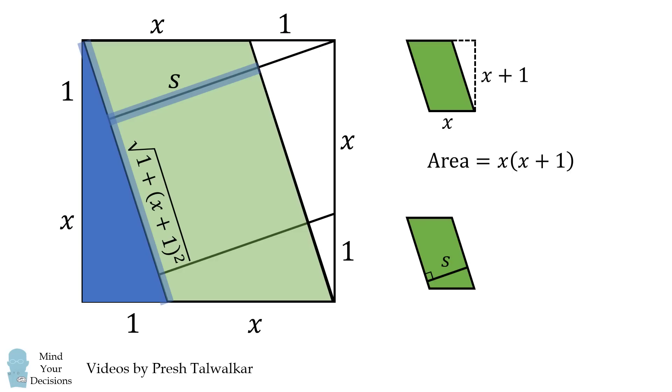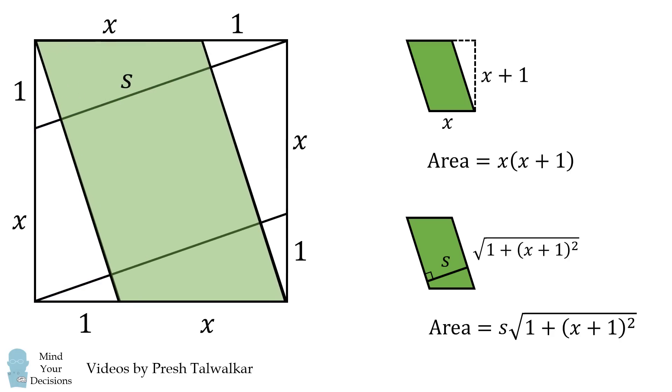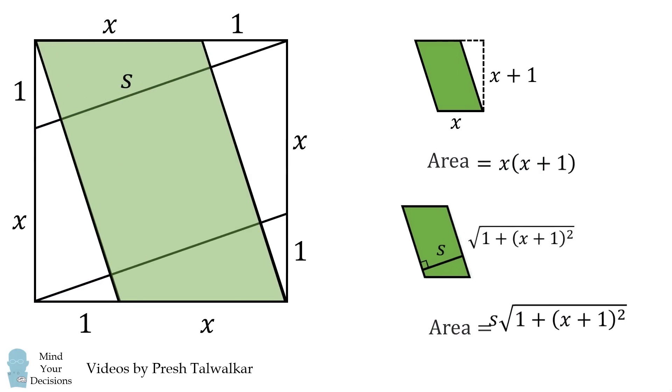We then take the product of the base and height to get another formula for the area of the parallelogram. We thus have two different ways to express the area of the parallelogram, so we set those equal to each other.